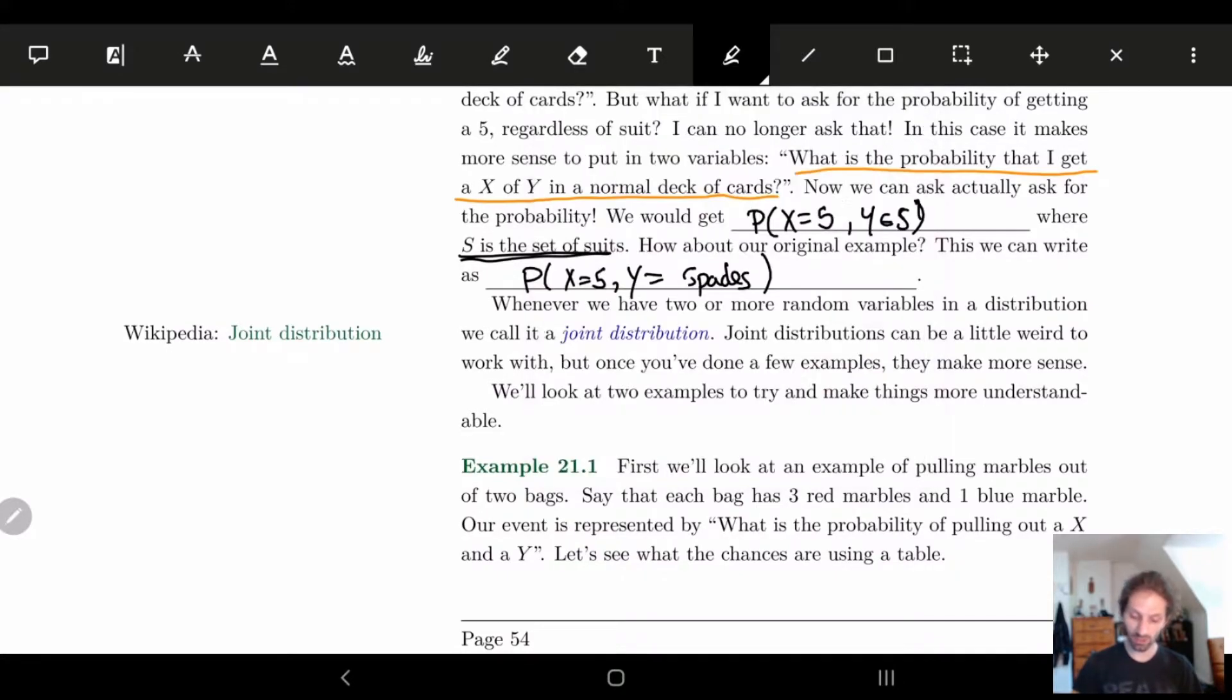Now joint distributions, as you can kind of see already, they're going to be a little weird. They're not something we're used to working with, but at the same time they are something we're used to working with. Because normally something has more than one parameter, like a person has different hair colors, has different eye colors, has different heights, different age. There's different ways we want these parameters to exist.